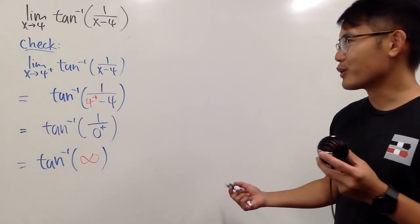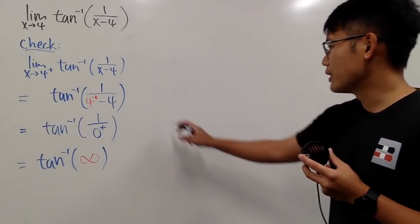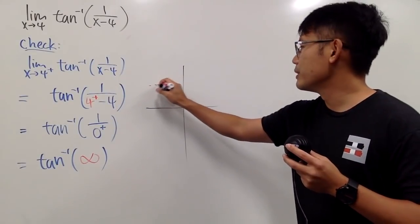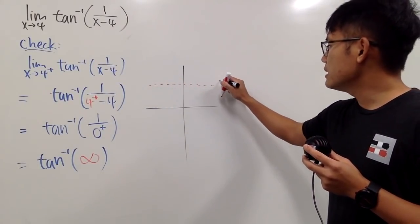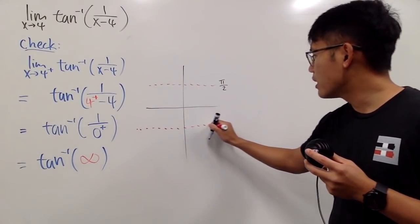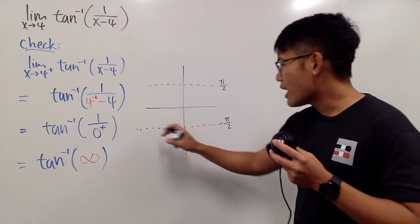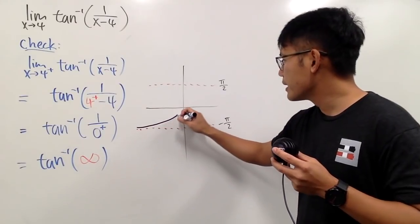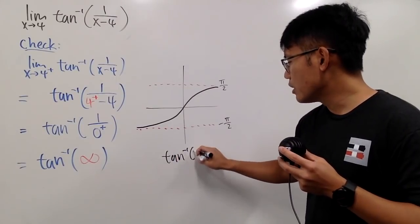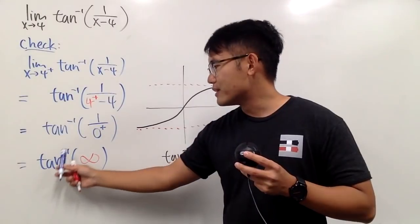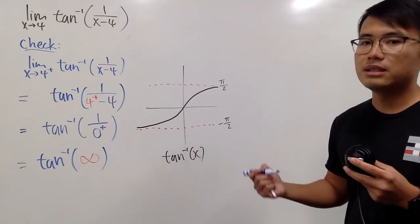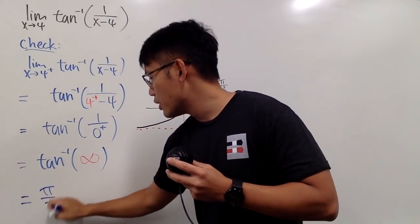To answer that, we need to know the graph of inverse tangent. The horizontal asymptotes are at y equals positive pi over 2 and negative pi over 2. When you graph inverse tangent it looks like an S-curve between those asymptotes. So when x is positive infinity inside inverse tangent, you're looking at that upper horizontal asymptote, and the y value is positive pi over 2 — that's the limit in this case.